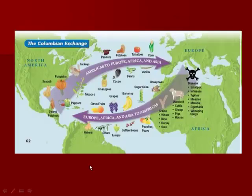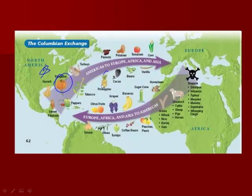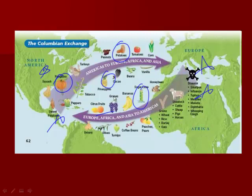This map shows a representation of what the Columbian Exchange is. Things on this arrow are things that start in the Americas and go to Europe — before the Columbian Exchange, there were no pumpkins, pineapples, or potatoes in Europe. And these are things starting in Europe and Africa going to the Americas — before the Columbian Exchange, there was no sugar, no grapes, and no pigs or cows in the Americas. So if you like a cheeseburger, you can thank the Columbian Exchange.